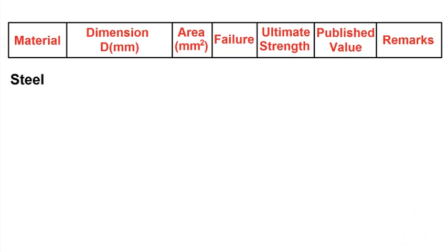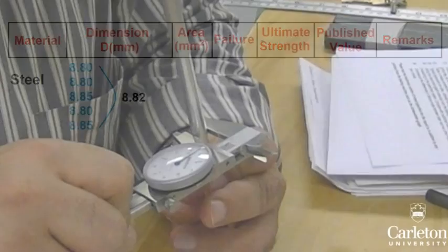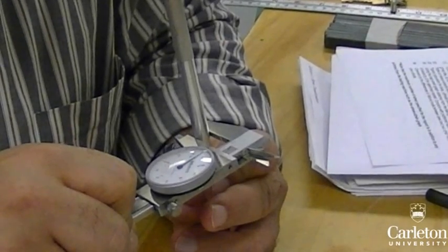For each specimen, measure the diameter at 5 different points along the length selected at random. Don't record diameter on the widened ends. These ends are wider so that they can be clamped by the testing machine. Calculate the average of these to get the final value for diameter. Repeat this for each material you intend to test.